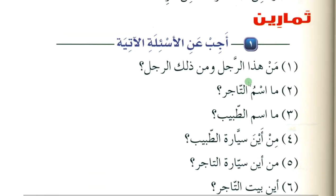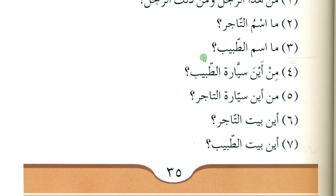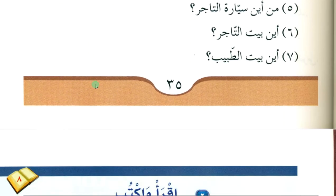Mas-mut-taajir — 'what is the name of the merchant?' You will say: ismut-taajiri Mahmood — 'the name of the merchant is Mahmood'. Mas-mut-tabib — 'what is the name of the doctor?' Ismut-tabibi Saeed — 'the name of the doctor is Saeed'. Min aina sayyaratu at-tabib — 'from where is the car of the doctor?' Sayyaratu at-tabibi minal-yaban — 'the car of the doctor is from Japan'. In this way you will write the answers as your homework.